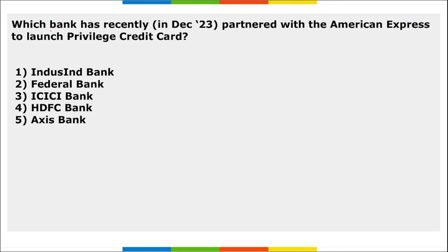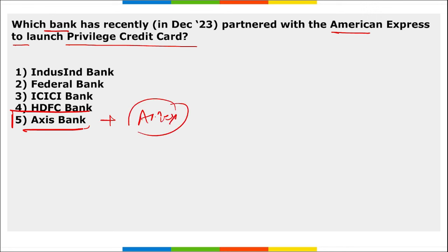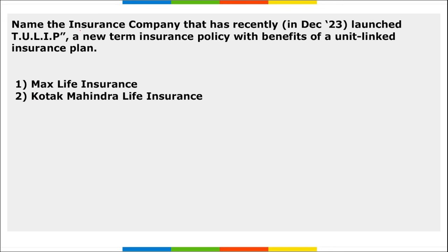Next: which bank has recently partnered with American Express to launch a privilege credit card? It is Axis Bank, which has partnered with Amex to launch a privilege credit card. The applicant should be a resident of India, aged between 18 to 70 years, and should have an annual income of minimum 6 lakh rupees.